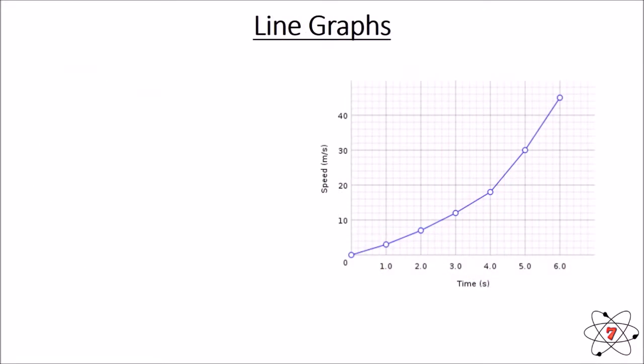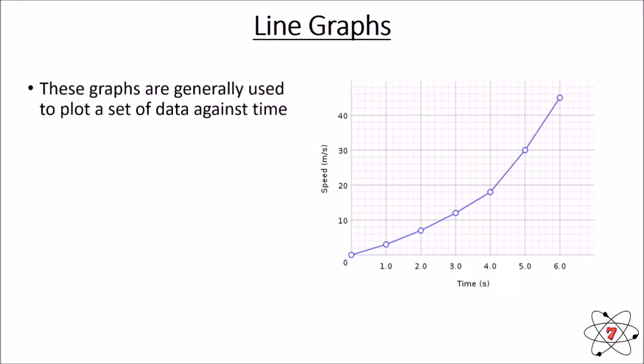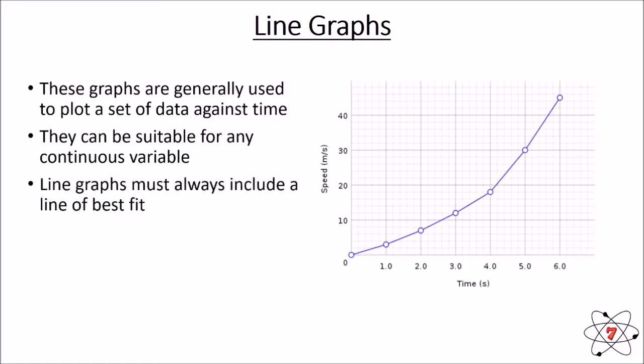A line graph is perhaps the most commonly drawn type of graph you're going to come across in science, along with a scatter graph. Both are drawn in the same way. Line graphs are generally used to plot a set of data against time. But they can be suitable for any type of continuous variable. Line graphs always need to have a line of best fit. And it's possible to plot multiple line graphs on a single set of axes. Now, if we look here, time, in this example, is our independent variable. It's going to go along the x-axis. Speed is going to be our dependent variable. It's going to go along the y-axis. It's always vital that we get the correct axes for the correct set of data.